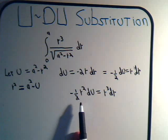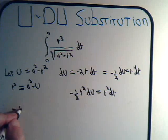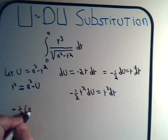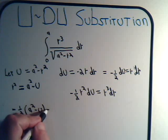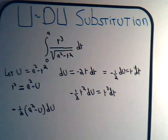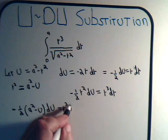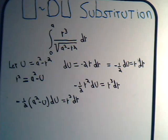And we say that, well, r² would equal a² minus U. So now we can go back to here and say, uh-huh, well this would then be minus one half times r², that's a² minus U, dU. And that would equal r³ dr. And that would work out okay for us.